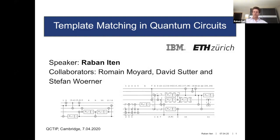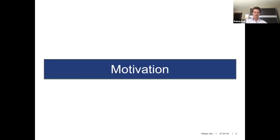The talk will essentially be about how to find a small quantum circuit in a big quantum circuit, considering commutation relations between pairwise gates. This might sound quite simple, but actually, to write an algorithm that is efficient for this task is not too easy.